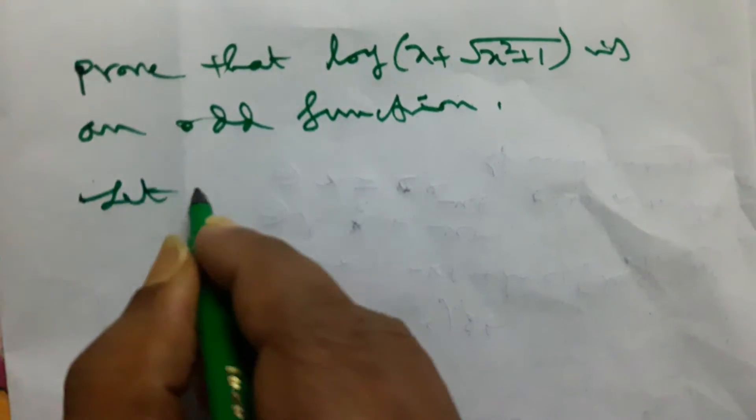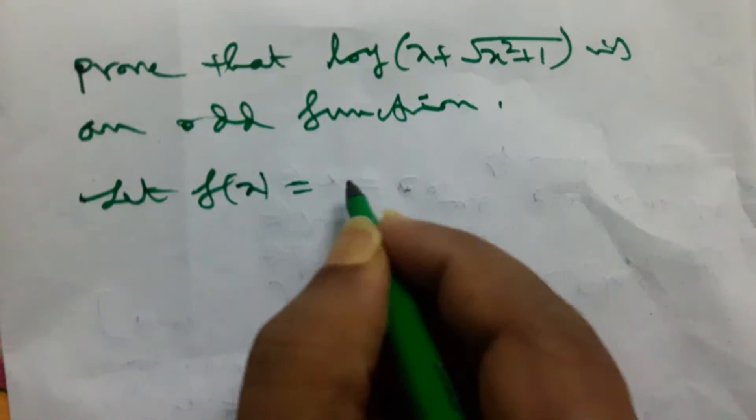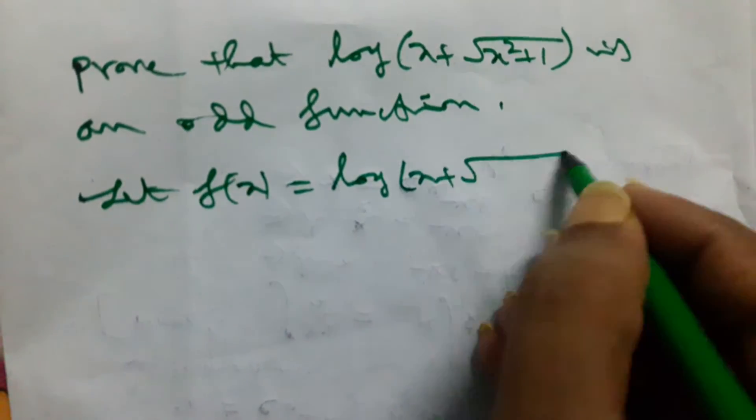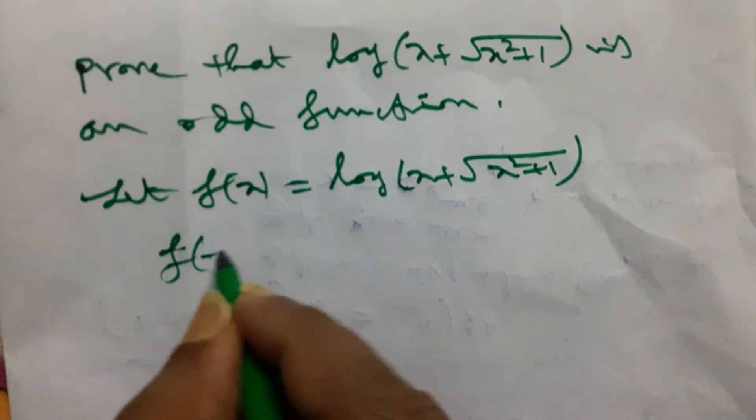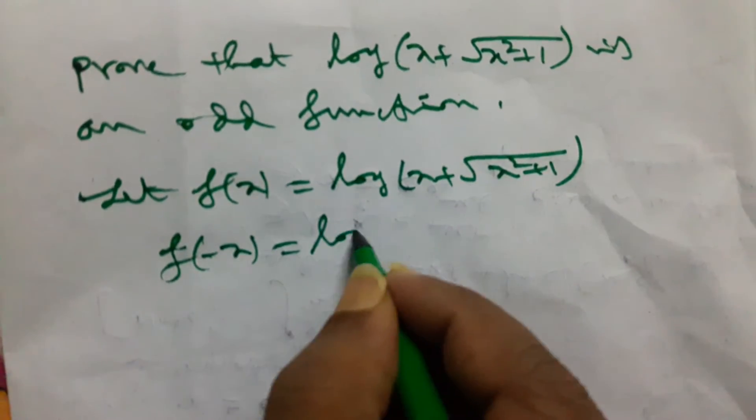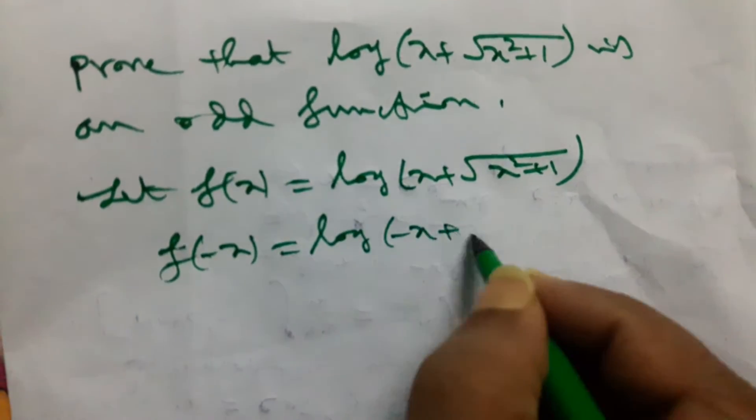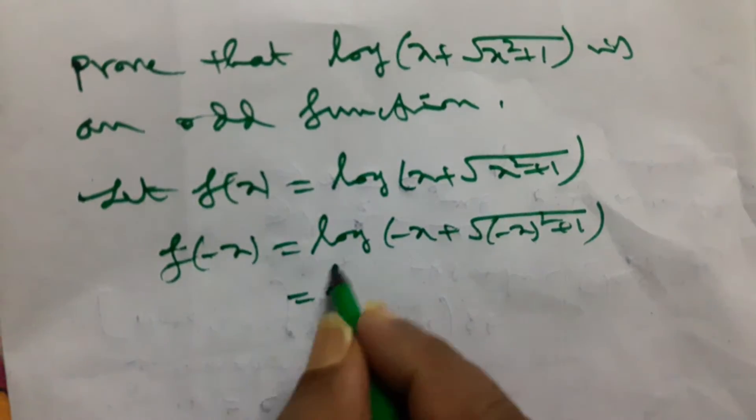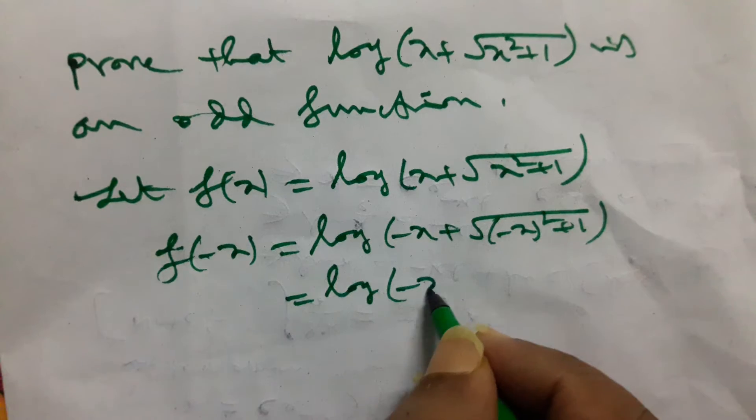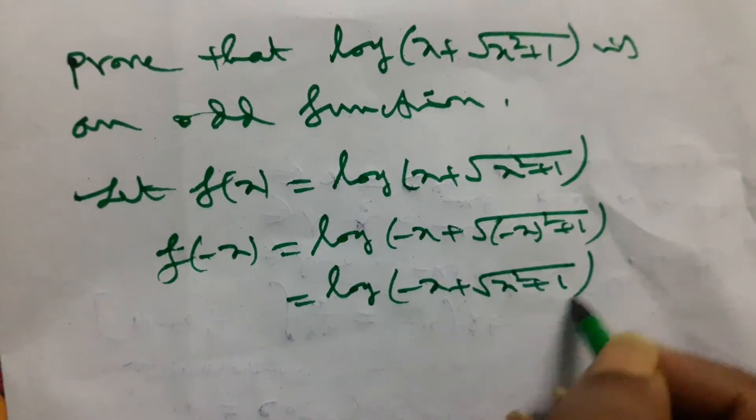Here we consider let f(x) equals to log of x plus root over of x square plus 1. Therefore, f of minus x equals to log of minus x plus root over of x square plus 1.